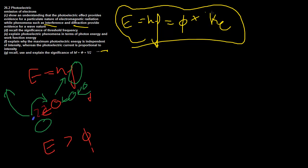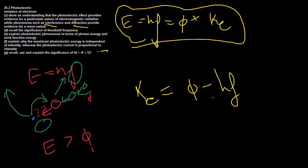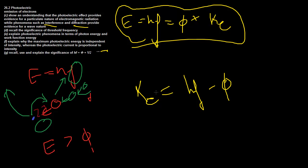The kinetic energy of the electron is equal to the total energy minus the work function. That makes a lot of sense — the total energy minus the amount you need to pay bail is however much energy you have left over for the electron's personal use, or conversion to kinetic energy.